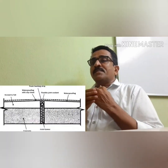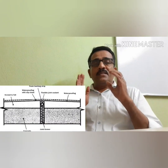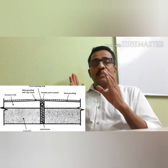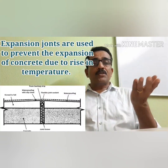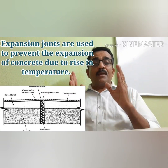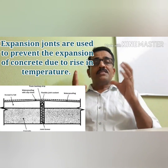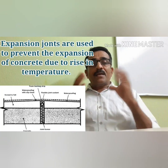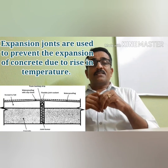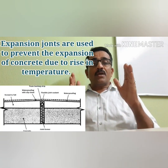Expansion joint. The expansion joint deals with temperature-related developments. Concrete also undergoes a chain of movement. Concrete has elastic properties — these properties cause it to elongate.